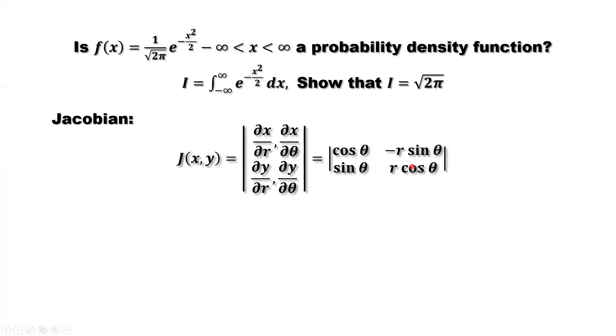We can simply find the determinant. That's cosine θ times r cosine θ equals r cosine² θ minus sine times r times sine. That's, here's minus, the minus, that's plus, r times sine² θ.